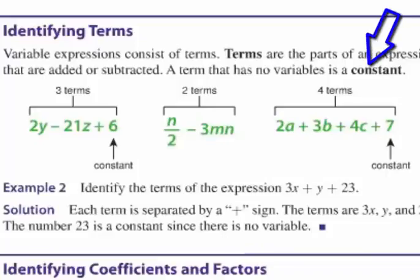Now you see the word constant. A constant is any term that has no variable to it. So a constant is just a plain number. It has no variable tagged along with it.